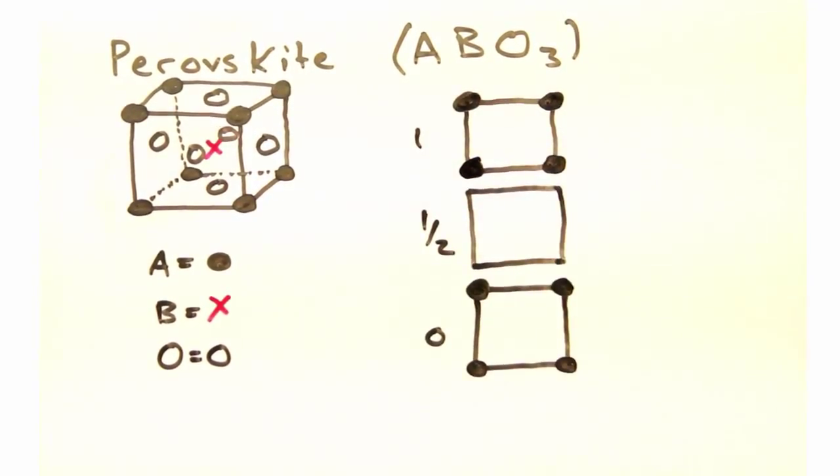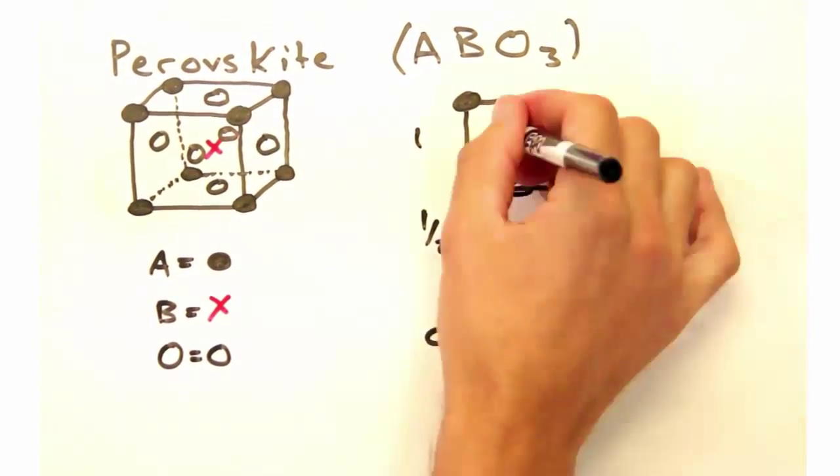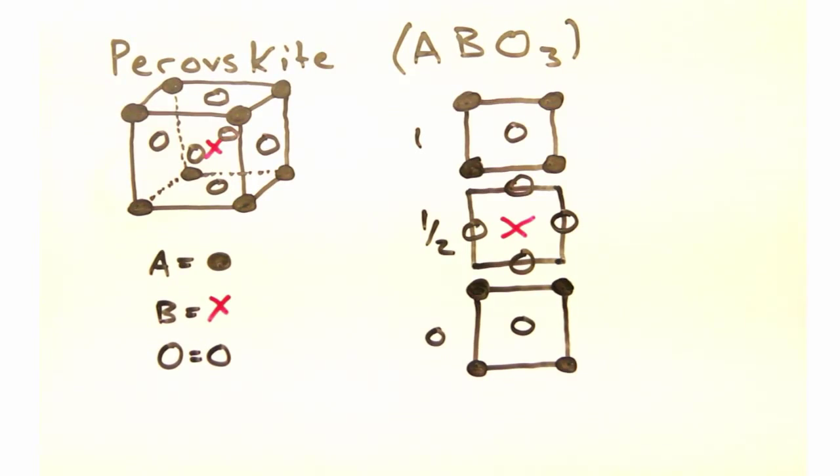Separated out like this, we can try to think about the coordination number for the B atom in the body center. From the slices, we can see that there are six atoms within equal distance of the B atom.